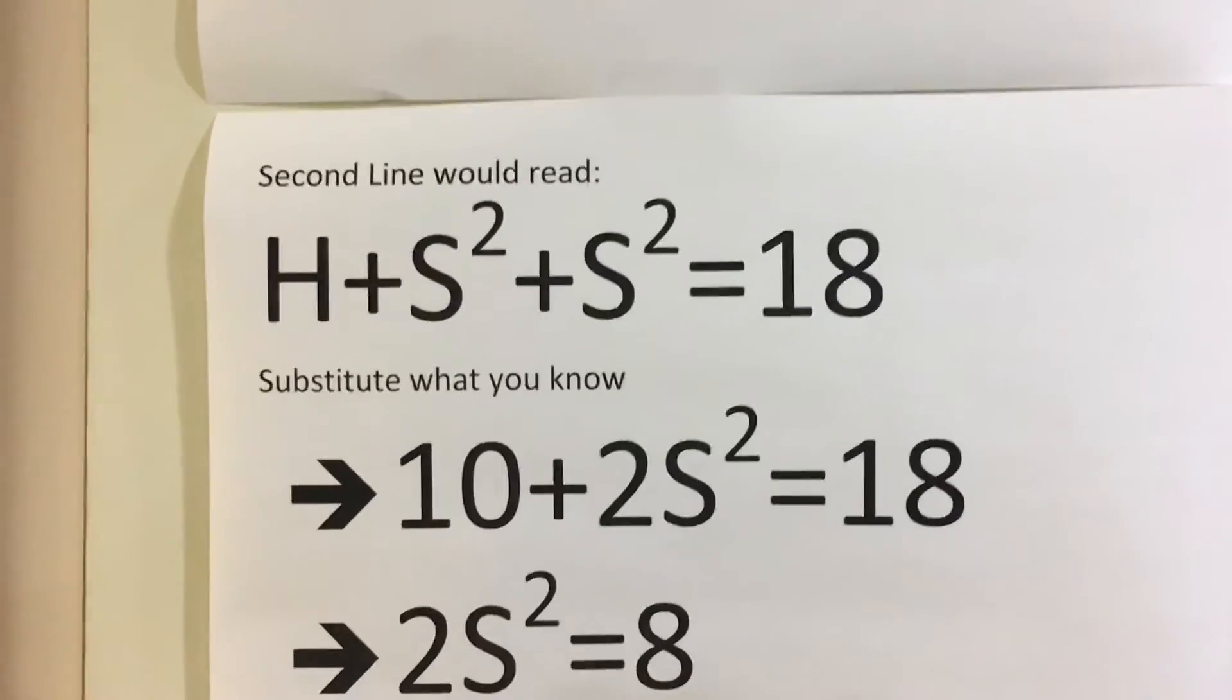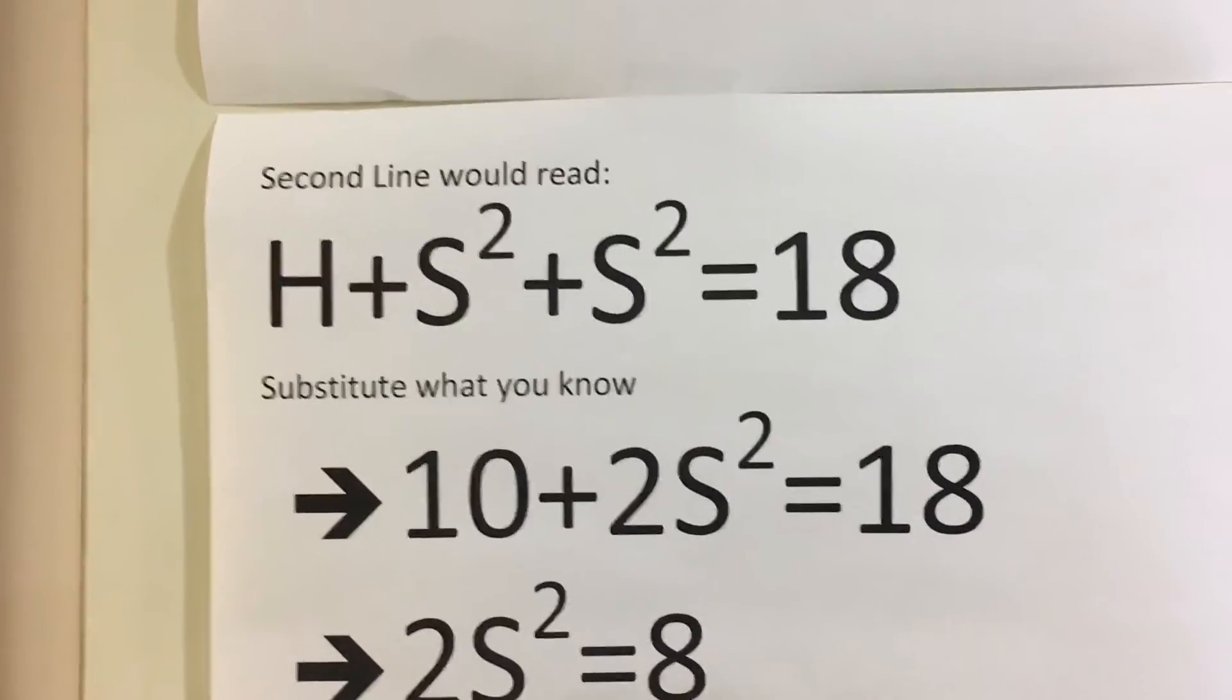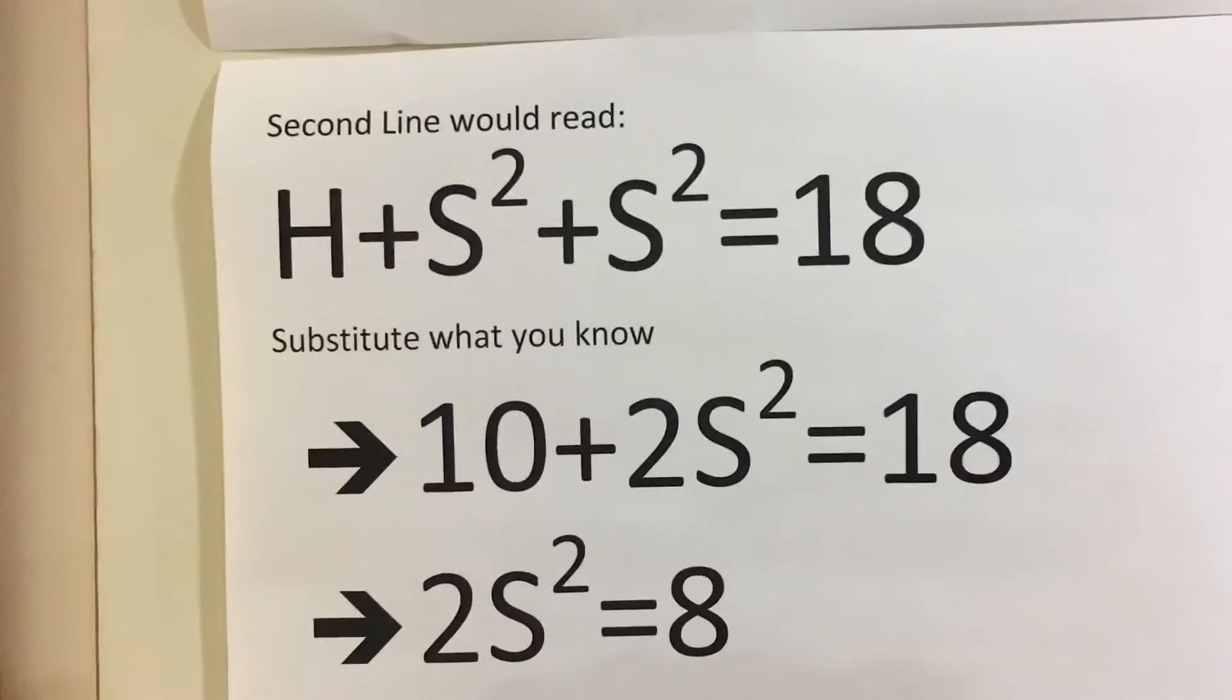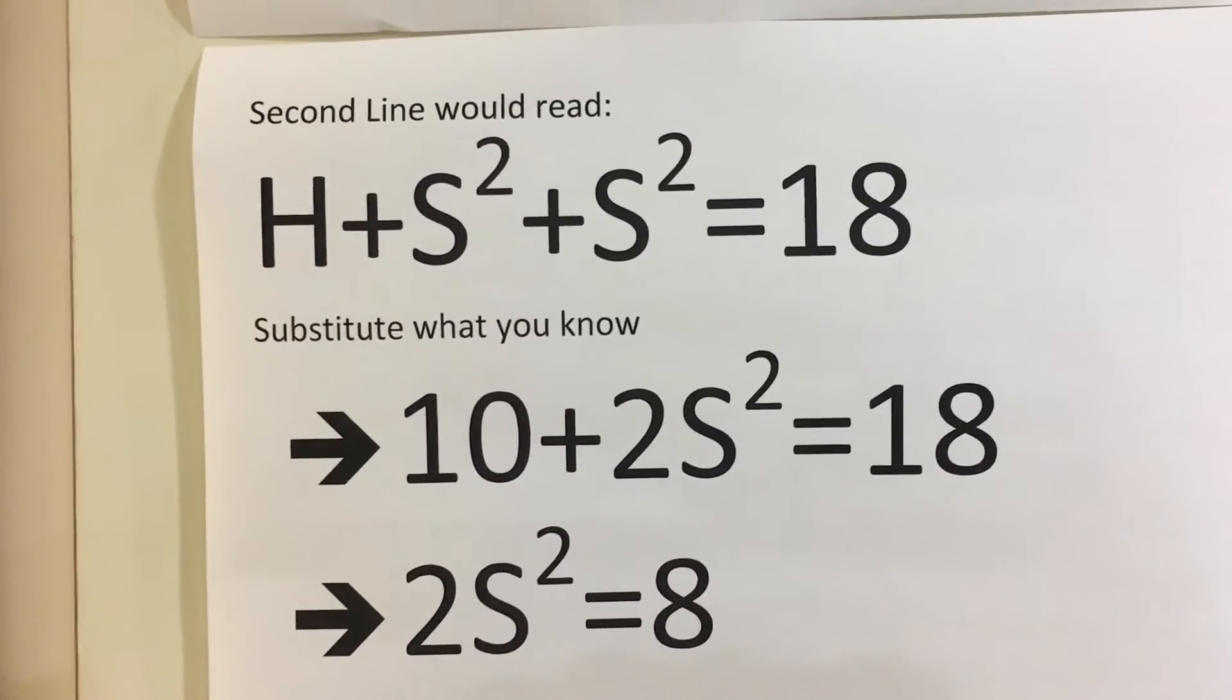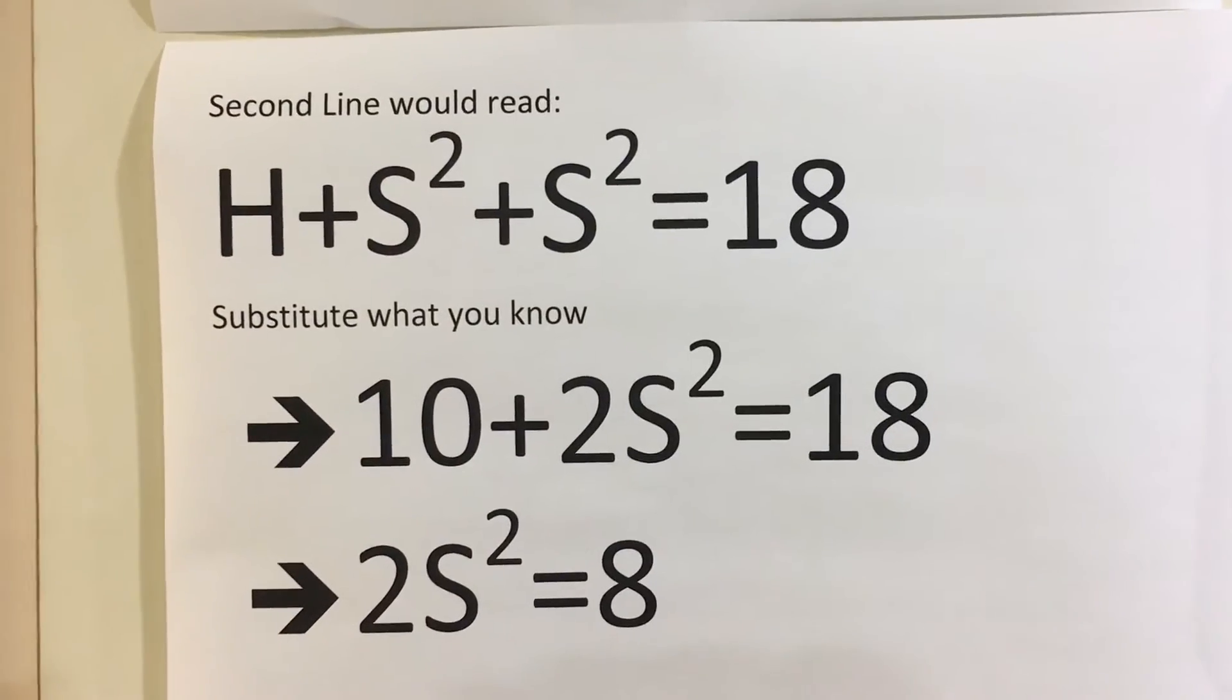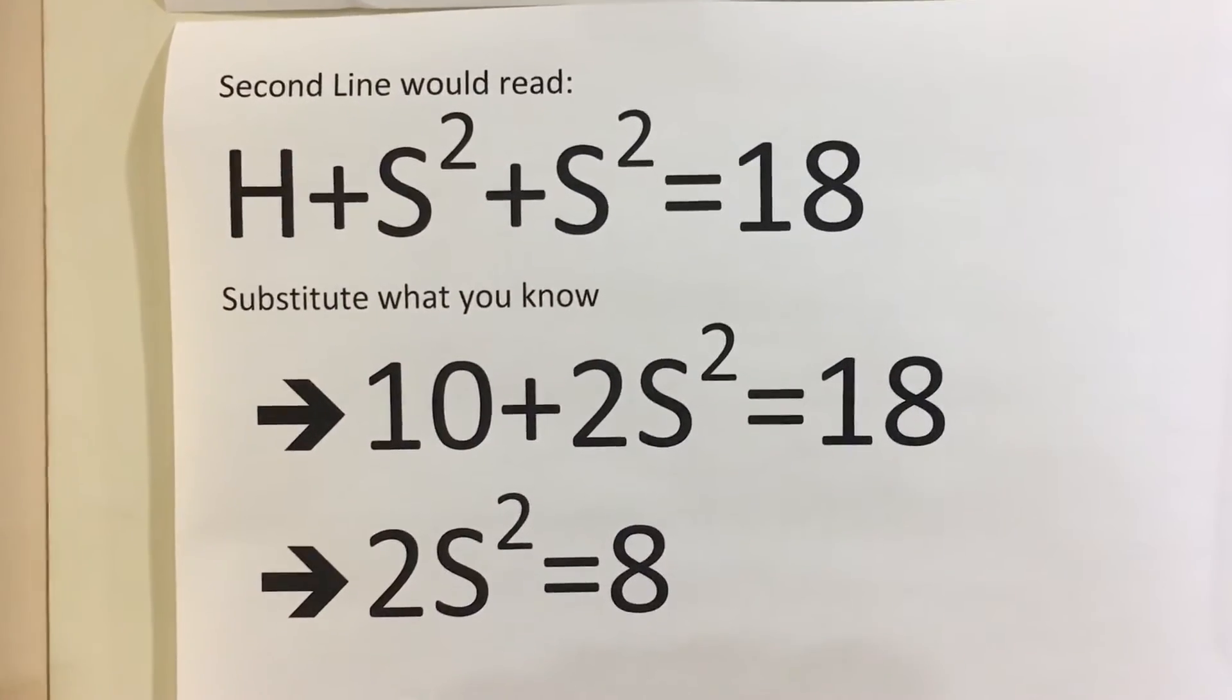The second line would then read H plus S squared plus S squared equals 18. This is where people start to mess up. People are saying it's H plus 2S plus 2S equals 18, but it's S squared. In the absence of an operand, the two variables are multiplied together, so it's actually S squared.